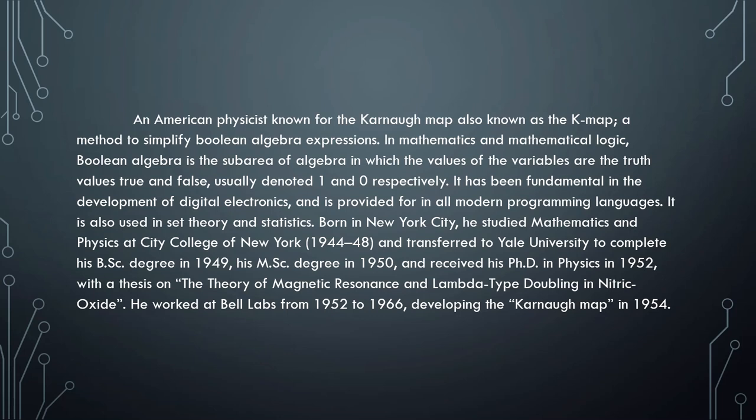He is born in New York City. He studied mathematics and physics at the City College of New York from 1944 to 1948 and transferred to Yale University to complete his B.Sc. degree in 1949, his M.Sc. degree in 1950, and received his Ph.D. in physics in 1952 with a thesis on the theory of magnetic resonance and lambda type doubling in nitric oxide. He worked at Bell Labs from 1952 to 1966, developing the Conroe map in 1954.